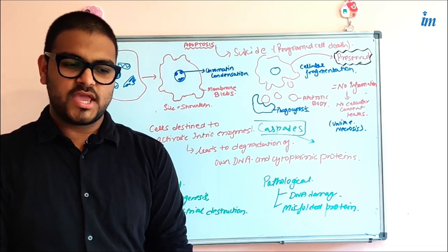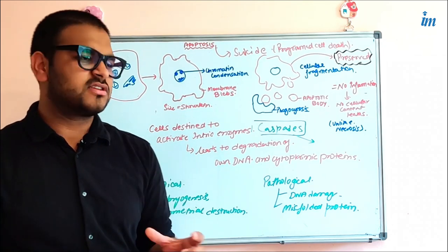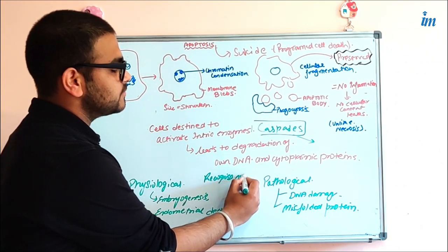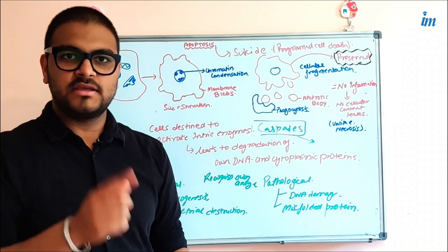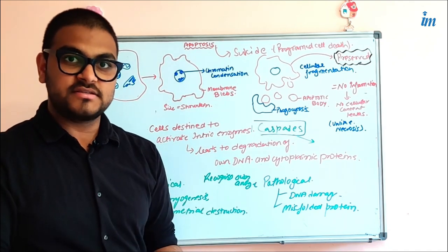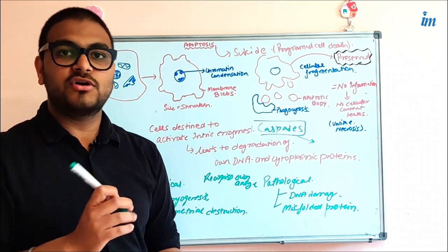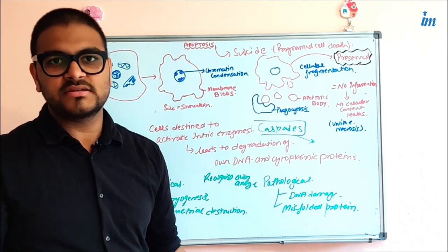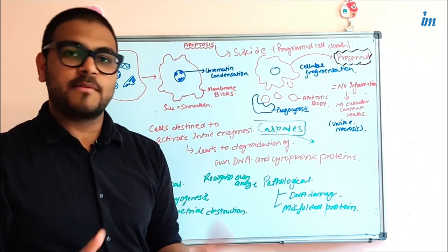Another physiological example is the elimination of self-reactive lymphocytes. Self-reactive lymphocytes are lymphocytes that can recognize the body's own antigens. When a T-lymphocyte is maturing in the thymus, self-antigens are presented to it. If the lymphocyte is able to recognize the self-antigen, it should not be present in circulation — because such a lymphocyte would damage the body's own cells. So within the thymus, such T-lymphocytes undergo apoptosis.